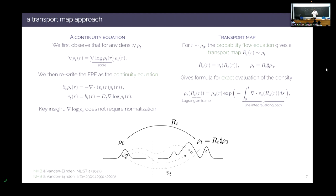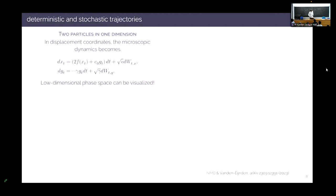I draw a sample r as an initial condition from rho_0 in very high dimension, but it's just an ODE — I can simply time-step it. To get intuition, let's look at two particles in 1D on the torus. That's a 4-dimensional system, but looking at differences in coordinates gives a closed 2D system I can visualize. Simulating for a long time gives a stationary density in phase space of X and G with two modes — basically two particles stuck on top of one another on the torus.